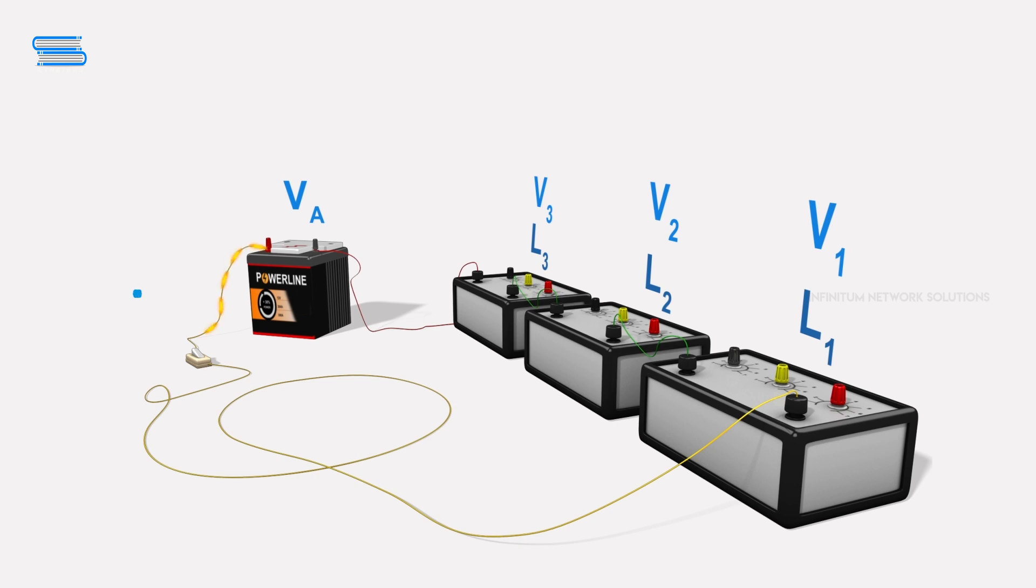In this circuit, we're going to consider voltage to be positive when it's added into the circuit and negative when it's taken away. Since we're thinking of a battery or cell as something that gives voltage to a circuit, we're taking that voltage, VA, as positive.